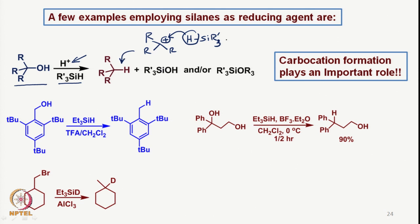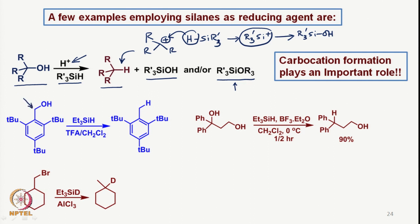The particular cation which forms here obviously has to be taken care of — the positive charge will react with the nucleophile present in the reaction medium, which can be water or the original alcohol. If we take a benzylic alcohol, it is relatively easy to form the corresponding benzylic cation. Once the benzylic cation is formed — a relatively stable benzylic cation — it gets reduced. Although it is a primary cation, it is benzylic, and therefore reduction gives this particular product.